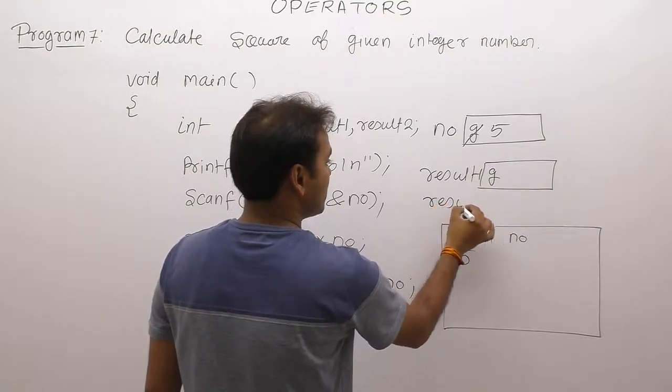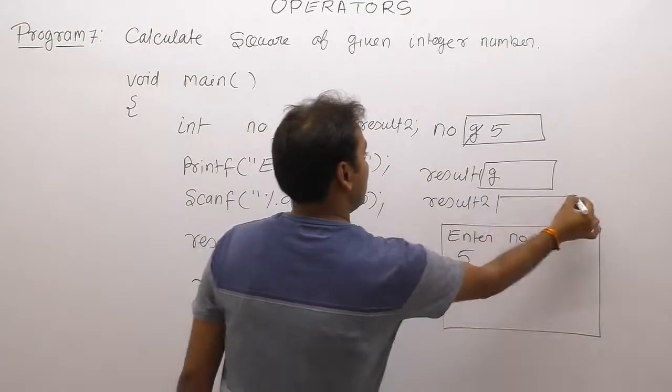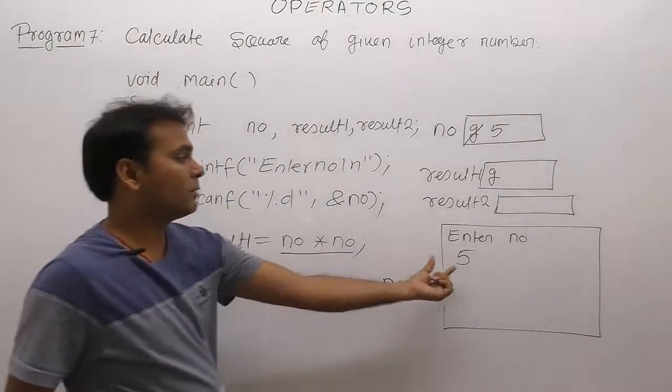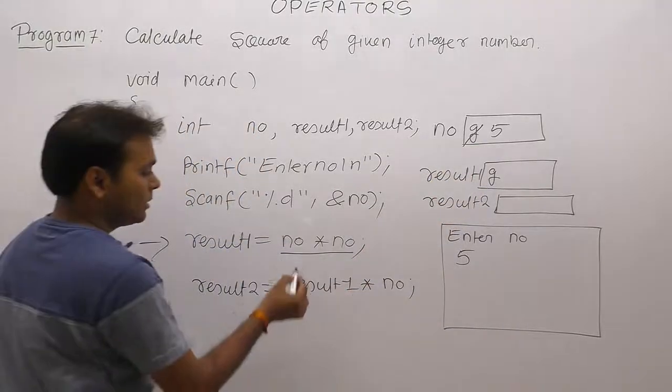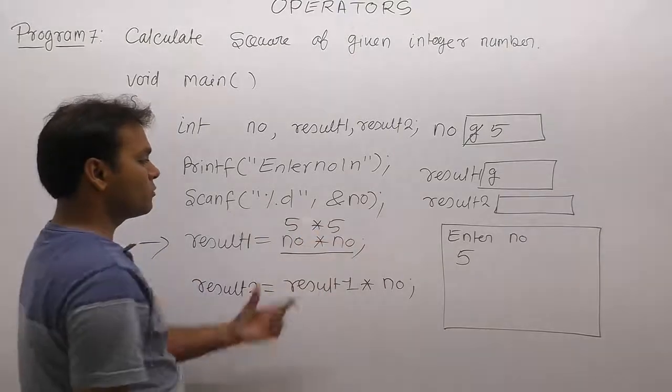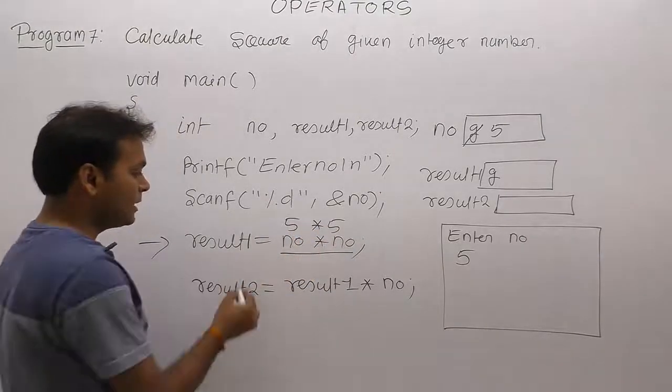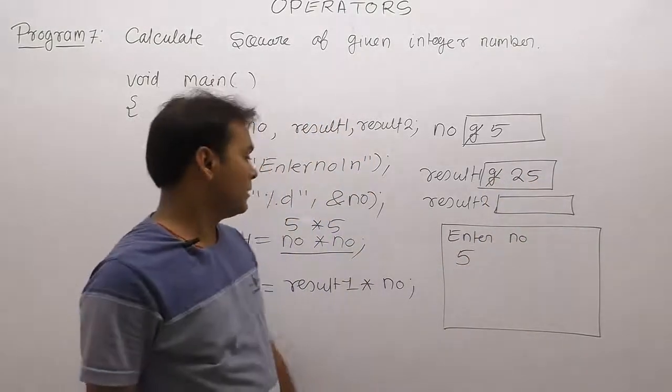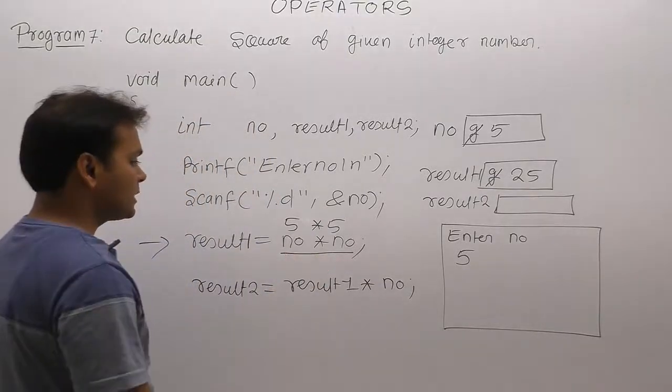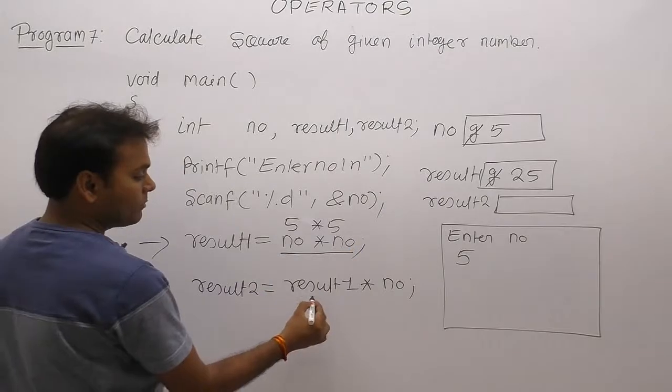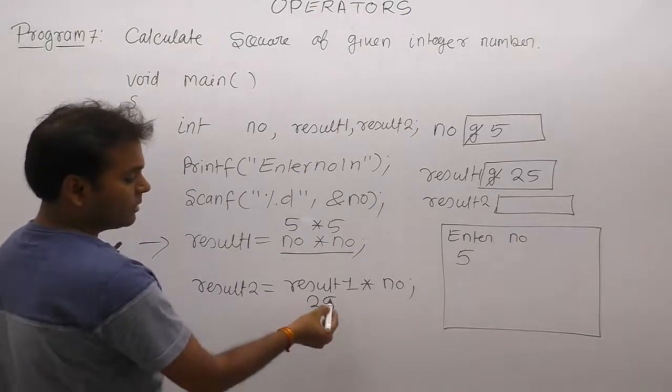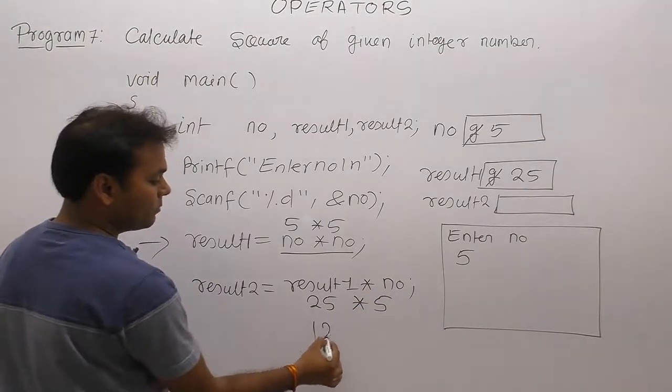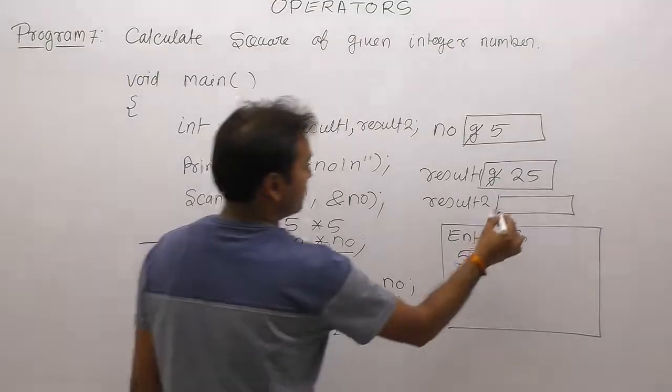We are using three variables total: result1, result2, and number. After reading inputs, what is the value of number? Value of number is 5. 5 multiply by 5, result becomes 25. 25 is assigned to the variable result1. Now result1 becomes 25. Next one, result1 already value 25. Then value of number is 5. Now 25 multiply by 5 becomes 125, assigned to the variable result2. Result2 contains result of cube operation.